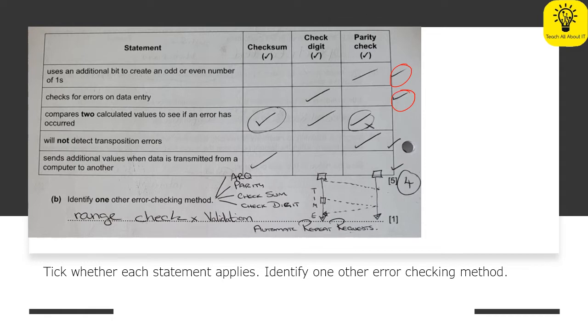Now the checksum is an interesting one because it actually did have two different ones, and I've got a little circle around this one because you could get away with either having a tick there or not having a tick there, which is a little bit strange.